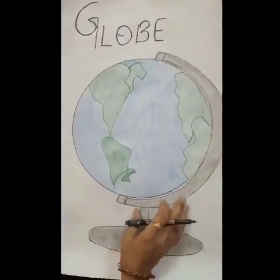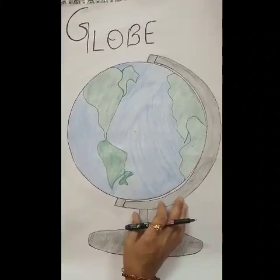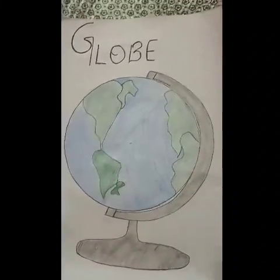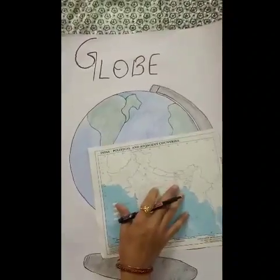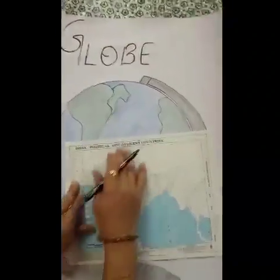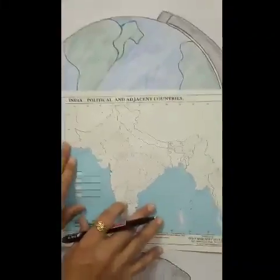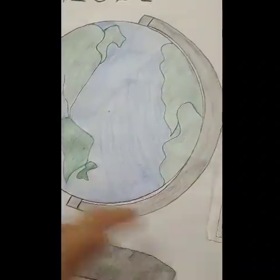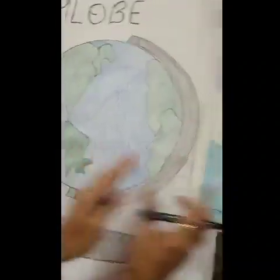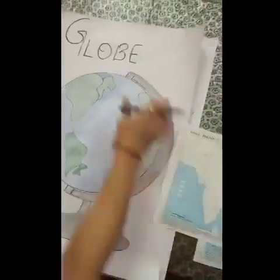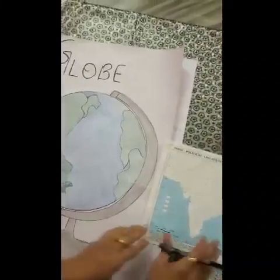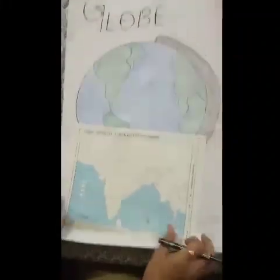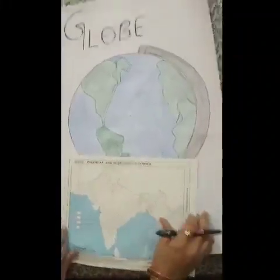Our second tool is Map. Look at this map. A map is a drawing of the whole Earth or part of it on a flat surface. Globe is a round shape, whereas a map is drawn on a flat surface.